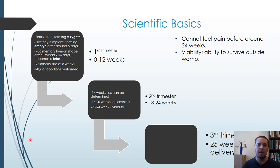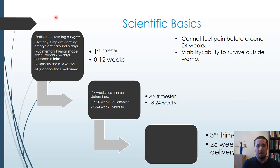Before we get into the ethics, let's take a look at some of the facts and science of pregnancy and its stages. There are basically three stages of pregnancy: the first, second, and third trimester. The first trimester begins when the egg is fertilized, forming a zygote. After around five days it implants and forms an embryo. After around 56 days it becomes a fetus, taking on a human shape — about the size of a raspberry after eight weeks.